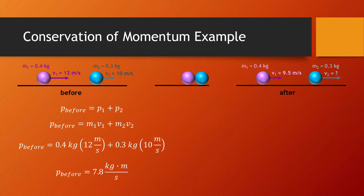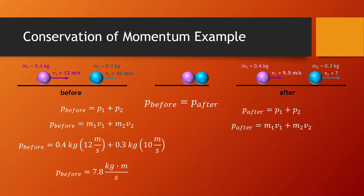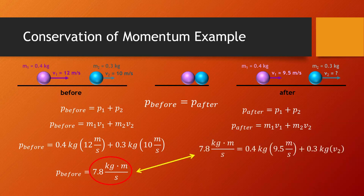Now let's look at what's happening after the collision. The total momentum of the system is again the sum of the momentum of object 1 and object 2, calculated by taking each of their masses and multiplying by their velocities. One of the velocities is unknown, but the total momentum after is not — we know it equals the total momentum beforehand: 7.8 kilograms meters per second. We now only have one unknown, and we can solve for the velocity of the blue ball, finding that it's moving at 13.3 meters per second.